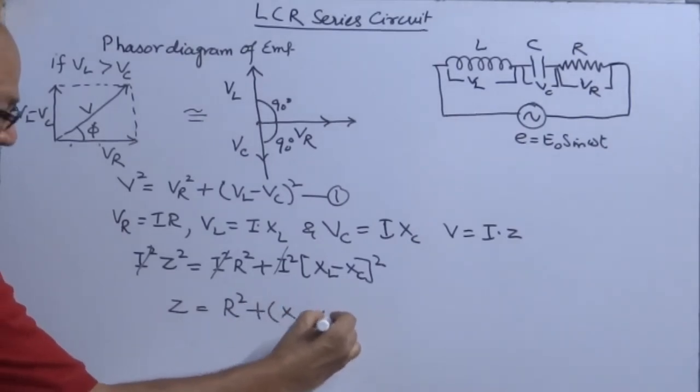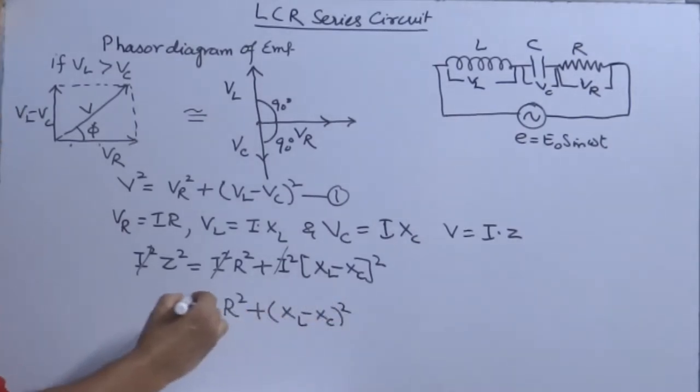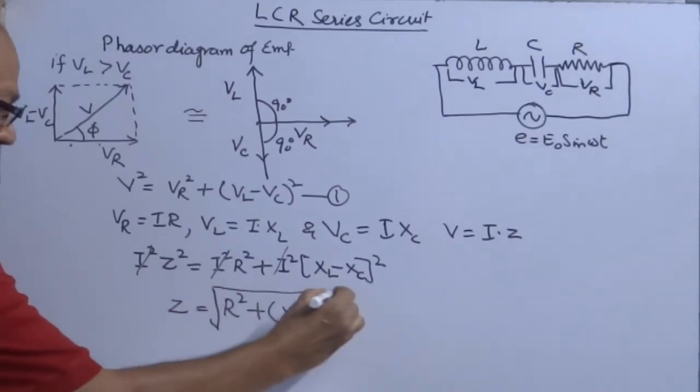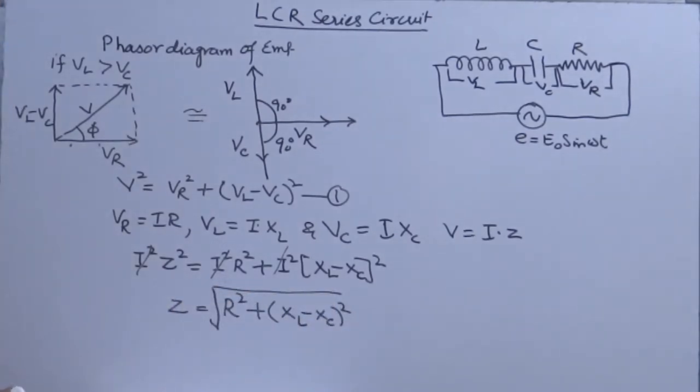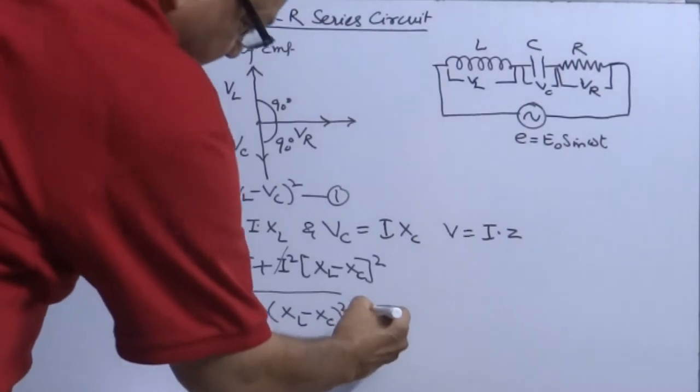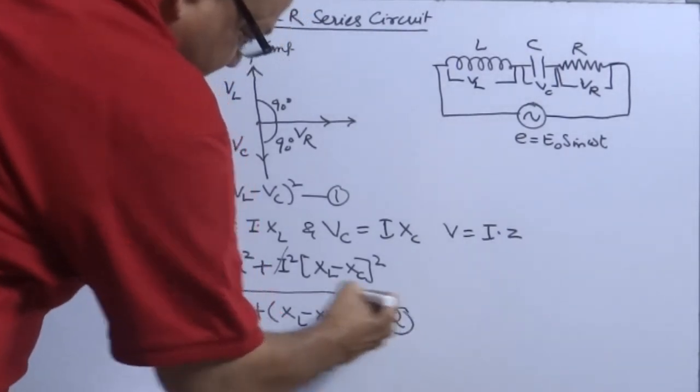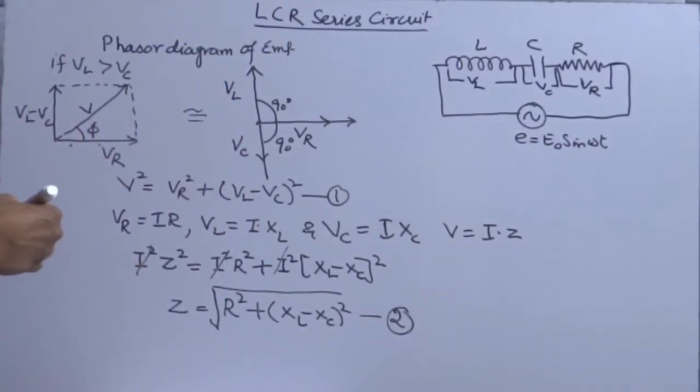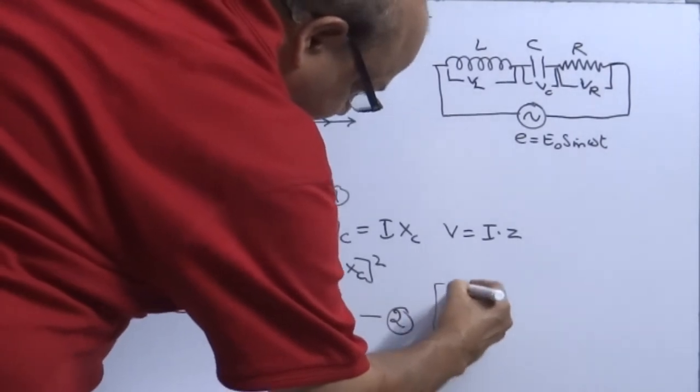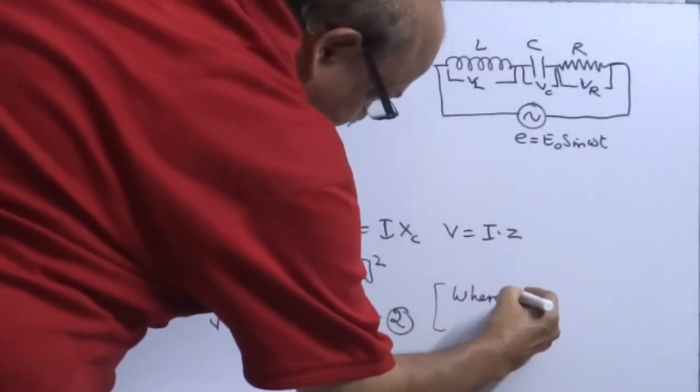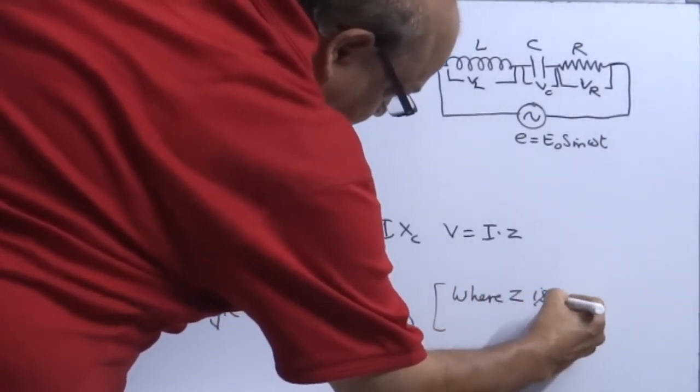Where Z is termed as impedance. What Z is known as, is called impedance.